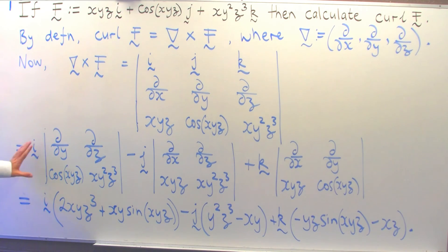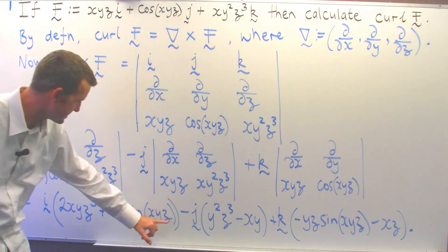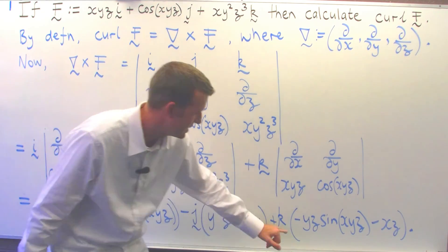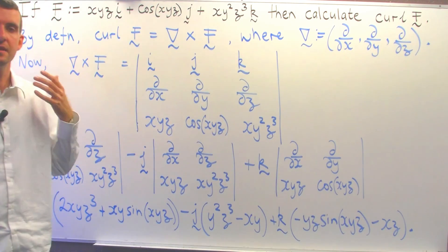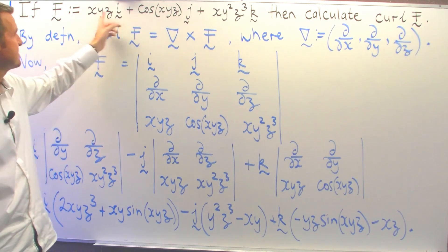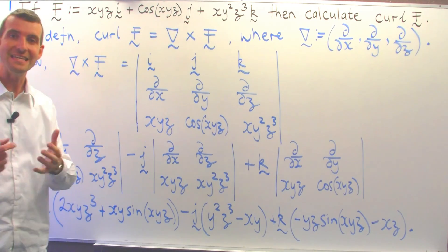if we were looking at the curl at the origin, so x equals 0, y equals 0, z equals 0, this will be 0, this will be 0, and this will be 0. So in other words, the curl of this vector field at 0 is the 0 vector.